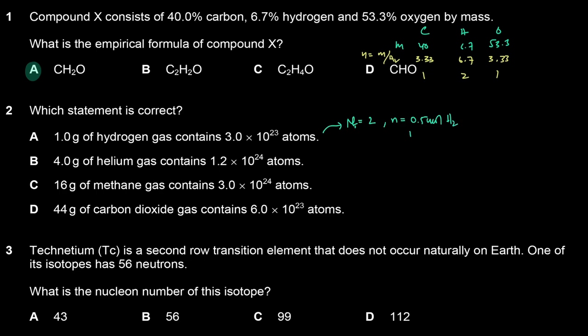That means I have 1 mole of hydrogen atoms, because each molecule has 2 atoms. So if I have half a mole of hydrogen gas, I have 1 mole of atoms. 1 mole of atoms is 6×10²³. So that's not it.